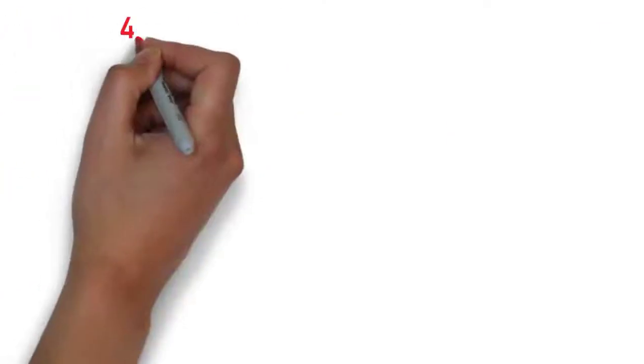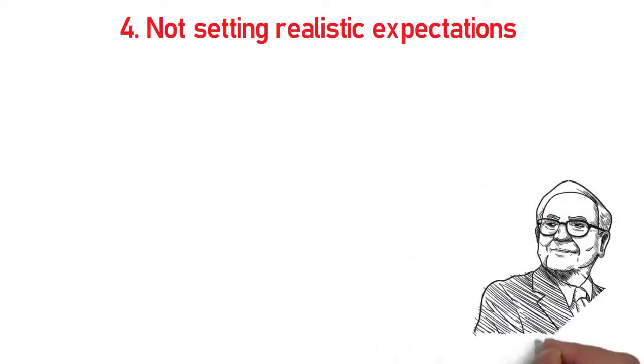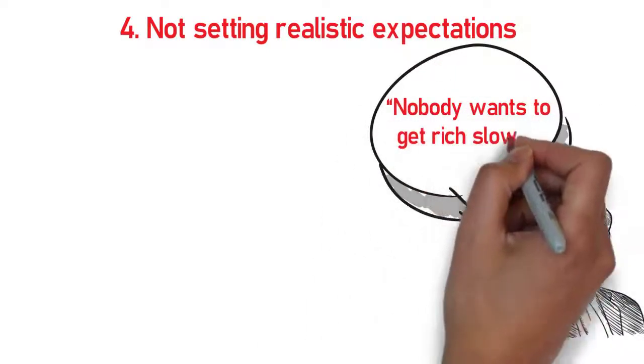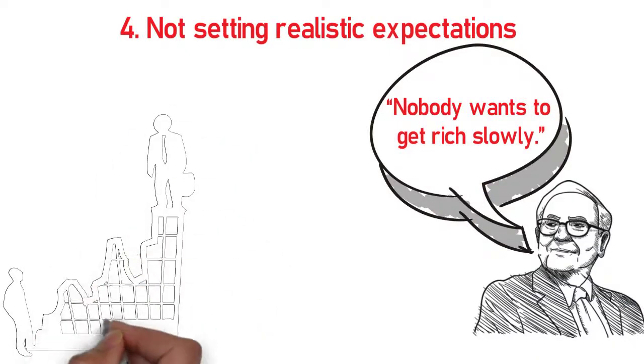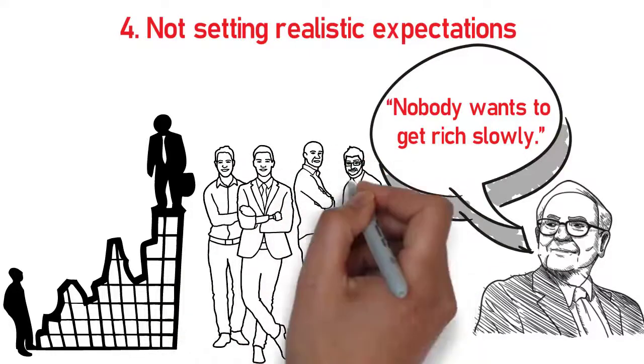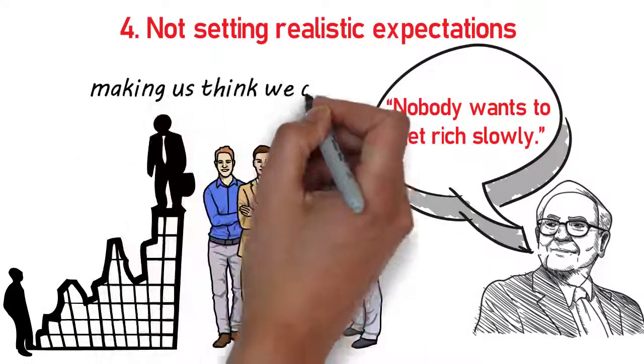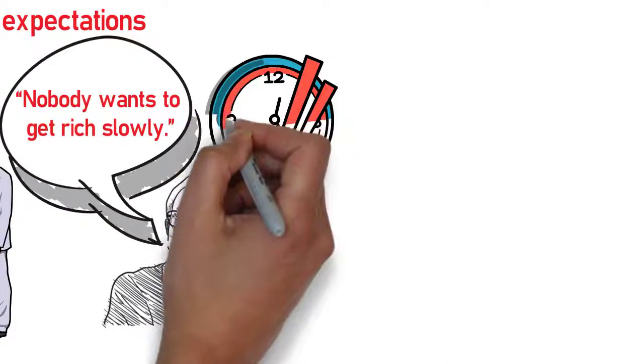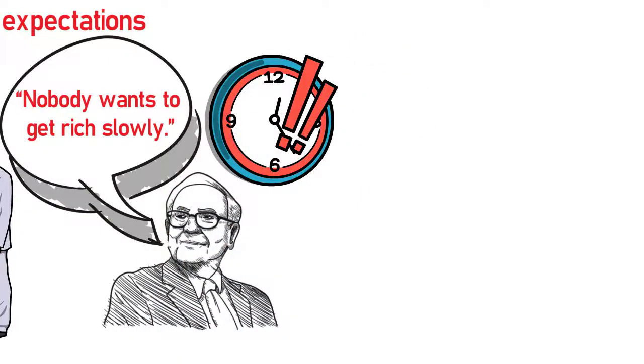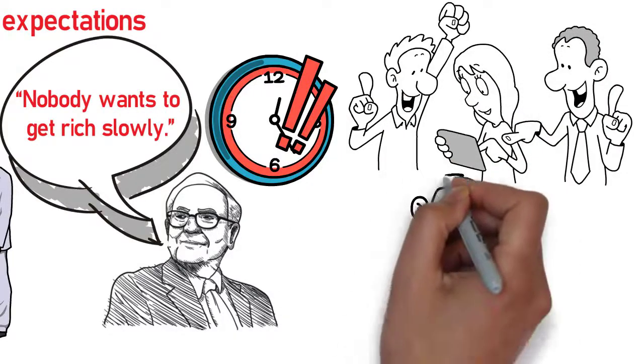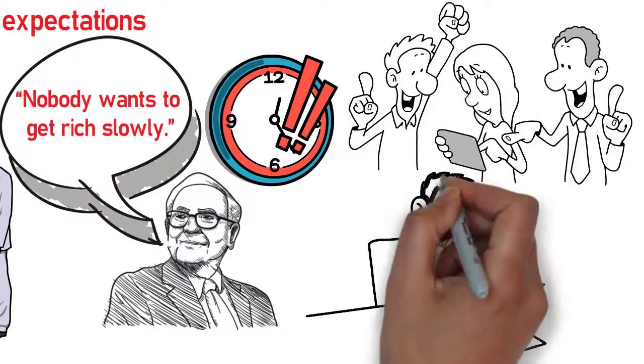Number four is not setting realistic expectations. Again, Warren Buffett has a great quote: nobody wants to get rich slowly. When setting financial goals, we all want to achieve them quickly. We hear stories of friends and family members who reach their goals in record time, making us think we can do the same. When setting your long-term goal, it's important to remember that the journey is going to take some time. Therefore, you should set a plan that is achievable and realistic rather than making your goal too aggressive and then being disappointed when you don't meet it.